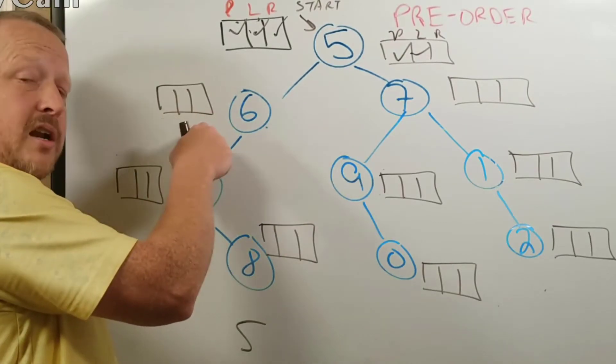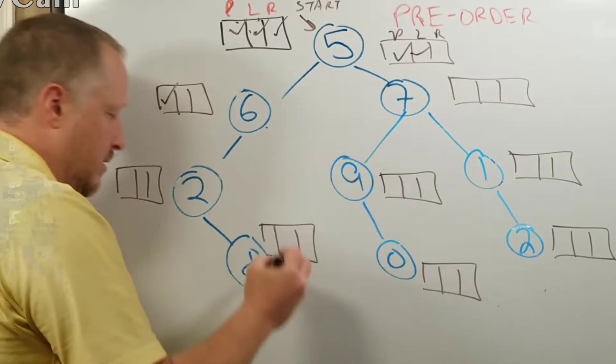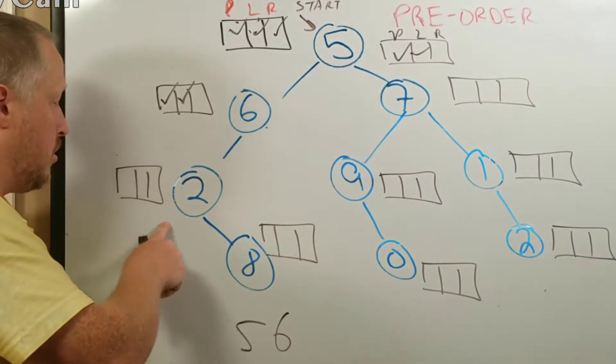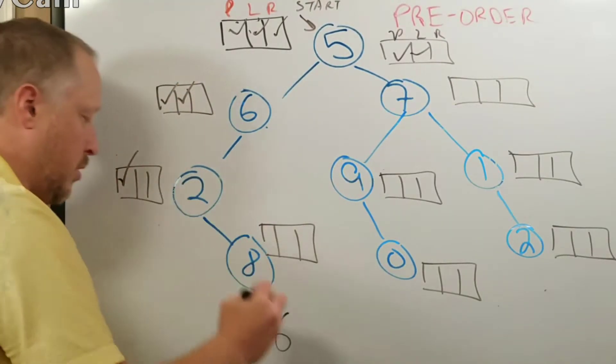Six, I haven't done anything yet, so I'm going to process. I'm going to go to the left. Now I'm at two. At two, I'm going to process.